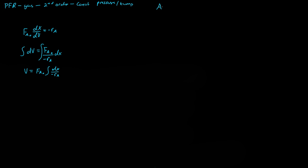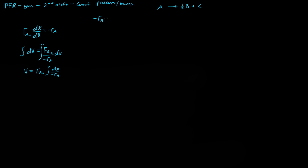For the chemical reaction 2A → B + 2C, we divide by the stoichiometric coefficient of A, which is 2, giving us A → ½B + C. So for every mole of A converted, we get half a mole of B plus one mole of C. The reaction rate for this second order reaction is -rA = k·CA².